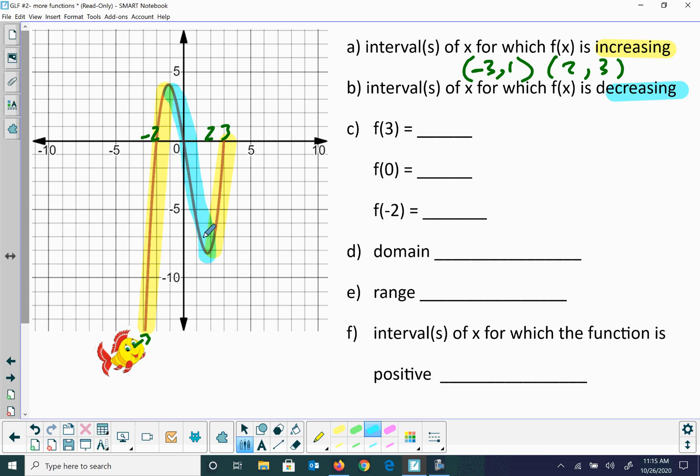It goes down to the right as I go to the right. The interval where it's decreasing looks like from negative one to two, and those are round brackets on all of those.